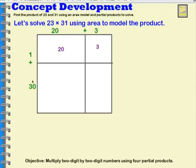Now I have 30 times 3. I'm going to be looking at this section of the area model. What is 30 times 3? I can think of 30 as 3 tens. So 3 times 3 tens is 9 tens. 9 tens is equal to 90.